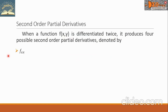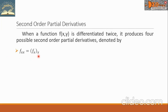The first one is f sub xx. This means we are going to take the partial derivative of f with respect to x, and then with the new function, we are going to take the partial derivative again with respect to x.